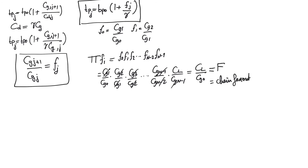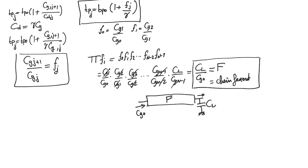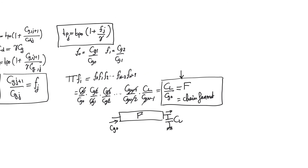Chain fanout F represents the fanout of the entire chain treated as a black box — input capacitance CG0, output capacitance CL, so F = CL/CG0. This is independent of how the inverters inside are sized. The objective of optimization is to minimize TP, the total delay, which is the sum of all stage delays: TP = TP0 · sum over J of (1 + fJ/gamma). We need to find the sizing of the inverters that minimizes this total delay.